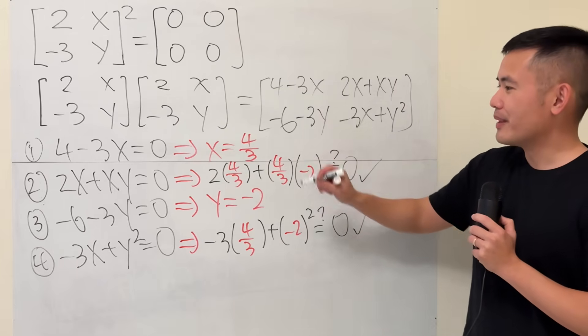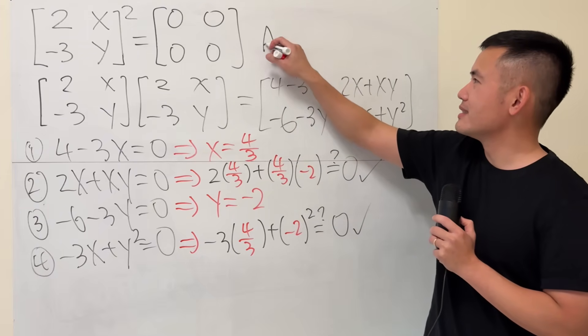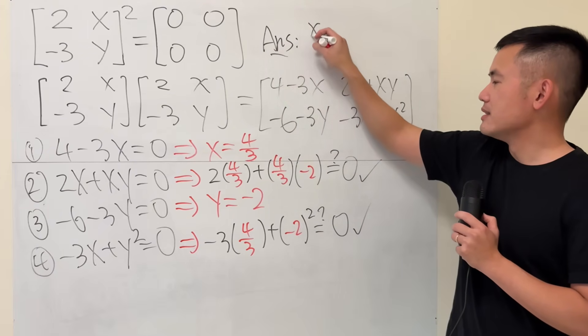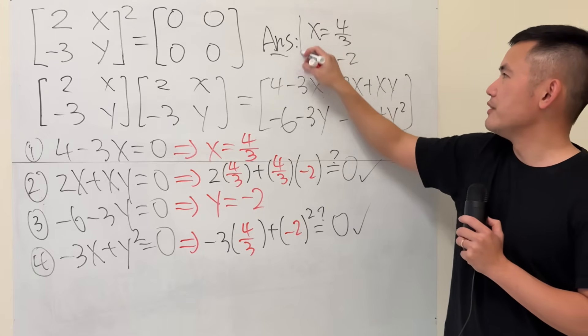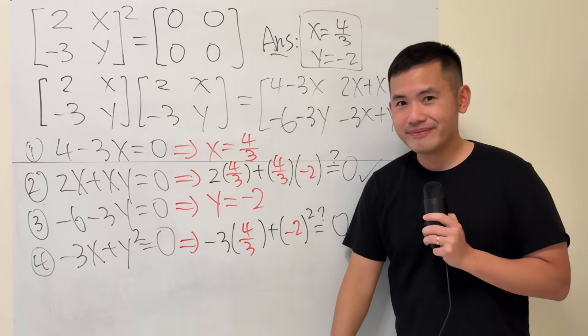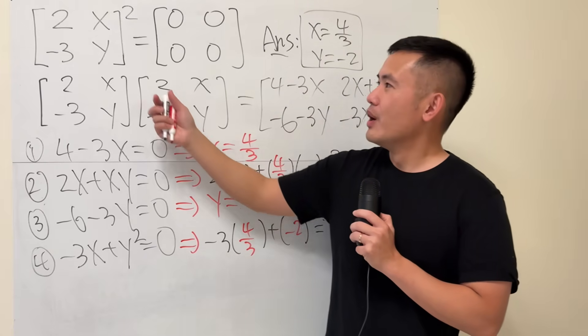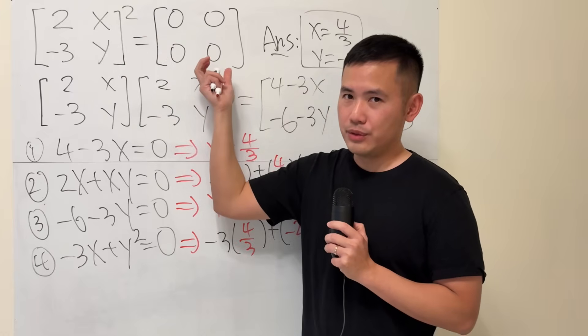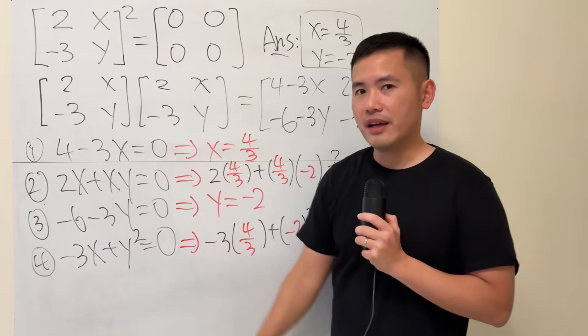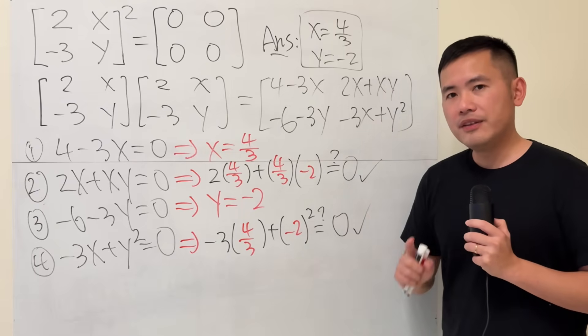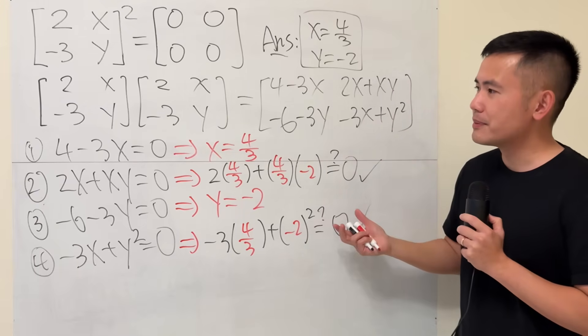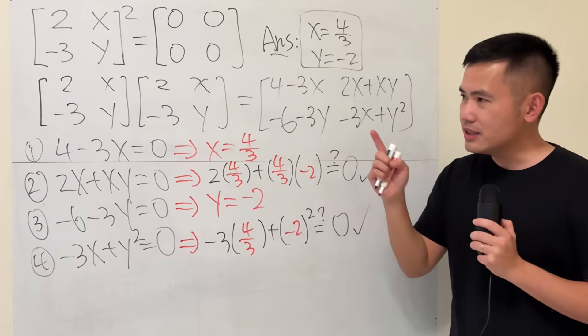So, it's possible. I'll just write this down for you guys. Answer: x is equal to 4 over 3, and y is equal to negative 2. Aha! Have a look. When we square a matrix, if we end up with 0, the matrix itself does not have to be the zeros matrix, which is very, very interesting. And if you want to see how to find out all possible such matrix like this, check out this video right here.